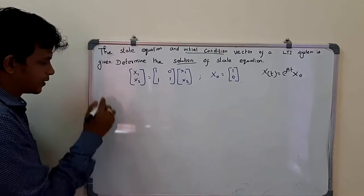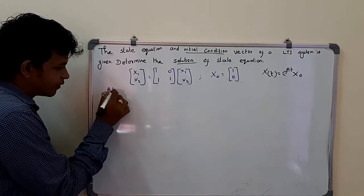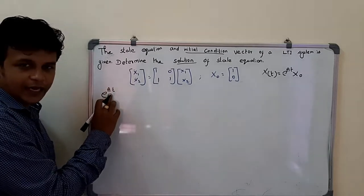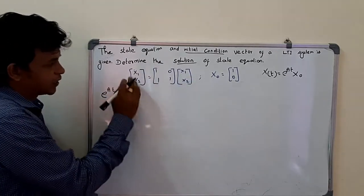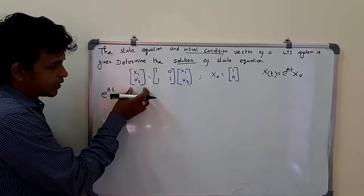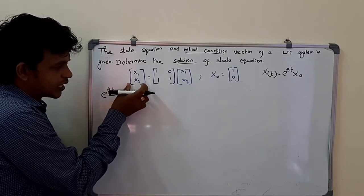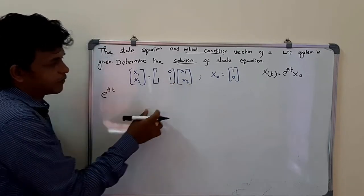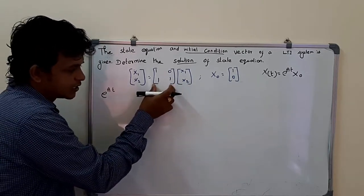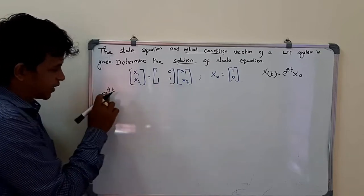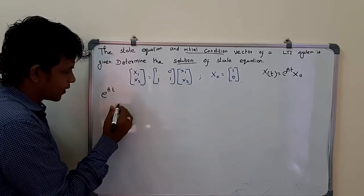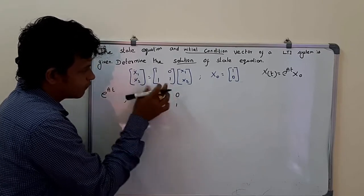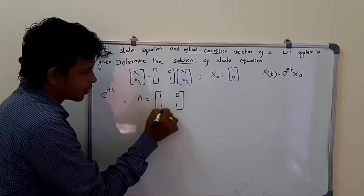To find e^(At), we must know A — the system matrix. The value of A can be obtained from the state equation. The state equation is given as the derivative of the state variable equal to the system matrix multiplied with the state variable. So A is equal to [1, 0; 1, 1], obtained from this state equation.